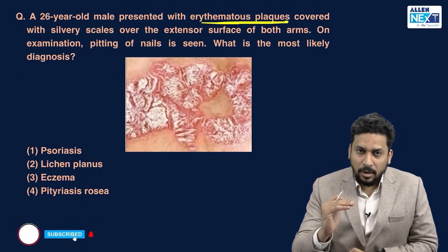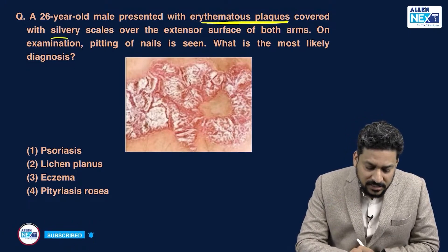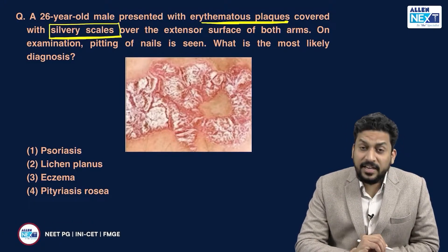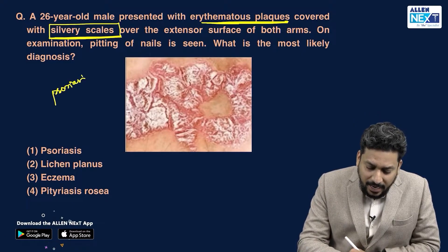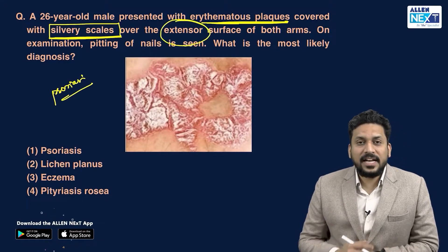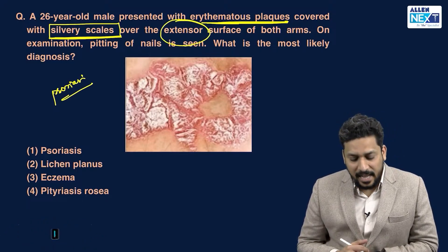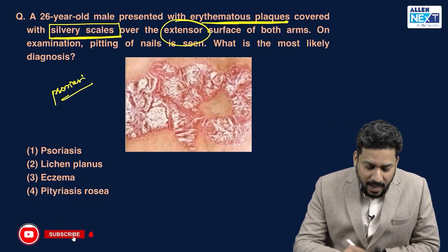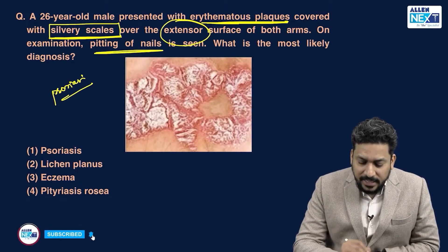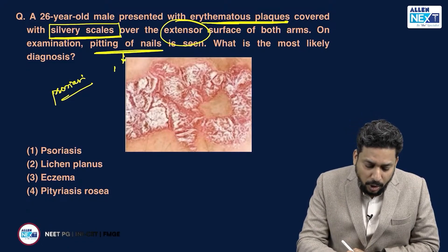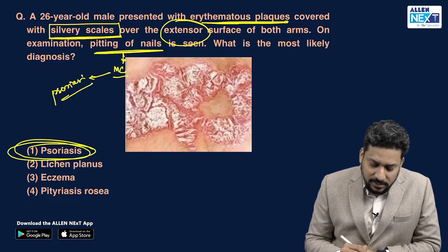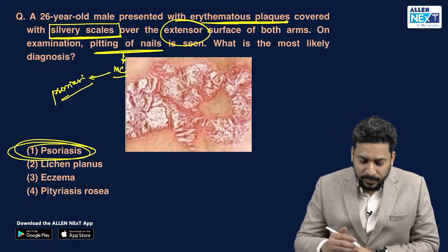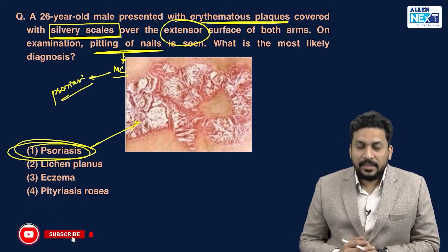A 26-year-old man presented with erythematous plaques — red in color, solid raised areas covered with silvery white scaling. This is very characteristic of psoriasis. The common sites involved are extensors like the knee, elbow, and back. On examination, pitting of the nails is also present, which is the most common nail change associated with psoriasis.